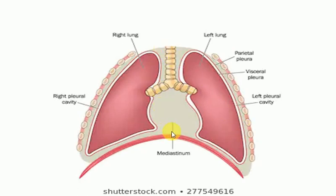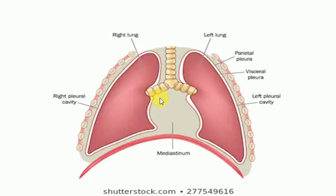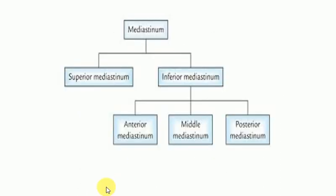The mediastinum is divided into two parts — superior mediastinum and inferior mediastinum — by a thoracic plane passing from the sternal angle to the lower border of T4. The inferior mediastinum is further divided into anterior, middle, and posterior mediastinum. This flow sheet diagram shows the different parts of the mediastinum divided firstly into superior mediastinum and inferior mediastinum, with the inferior mediastinum further divided into anterior, middle, and posterior mediastinum.